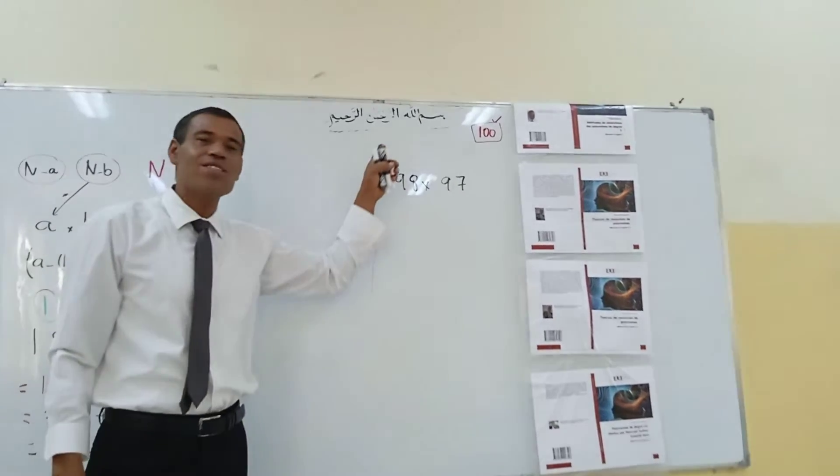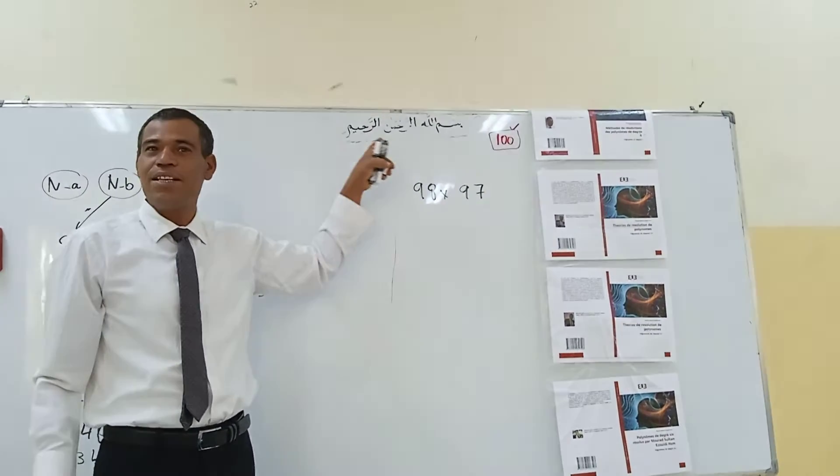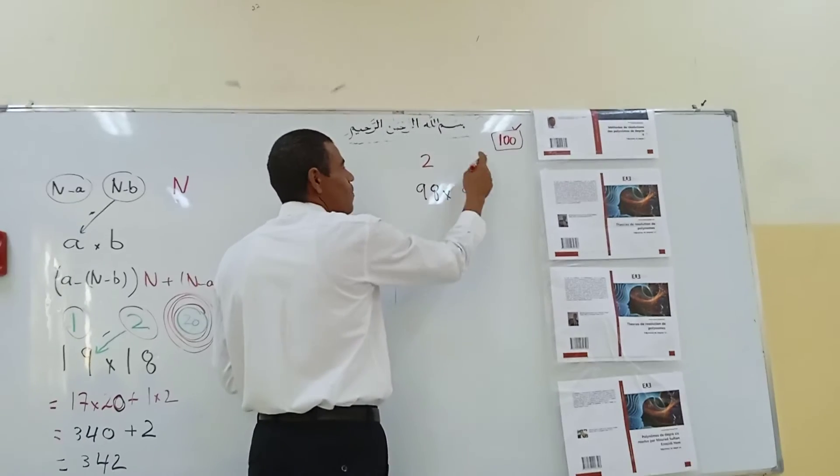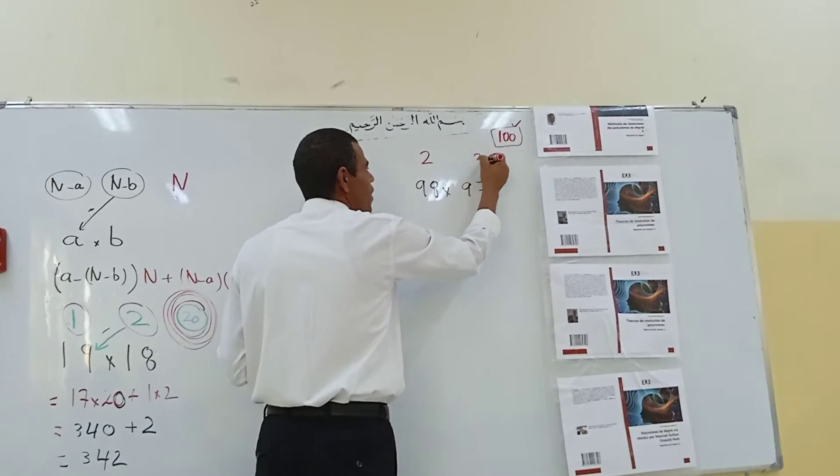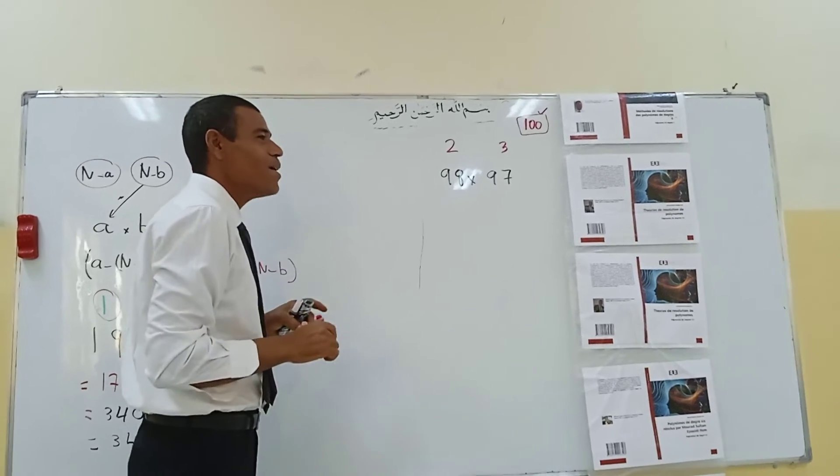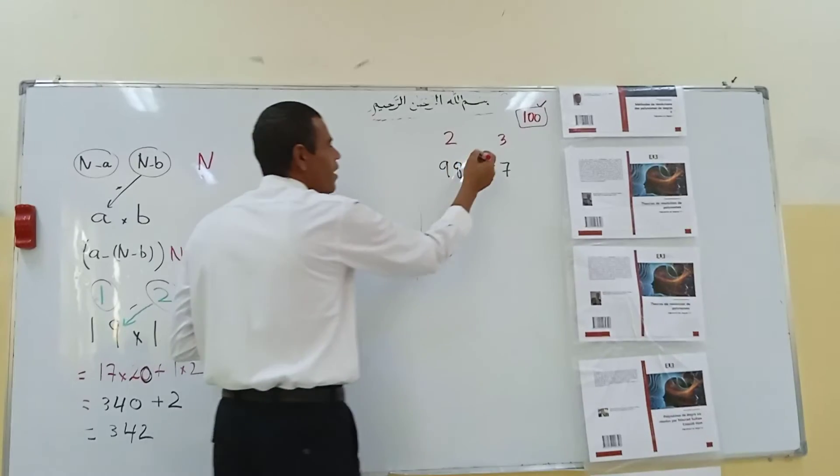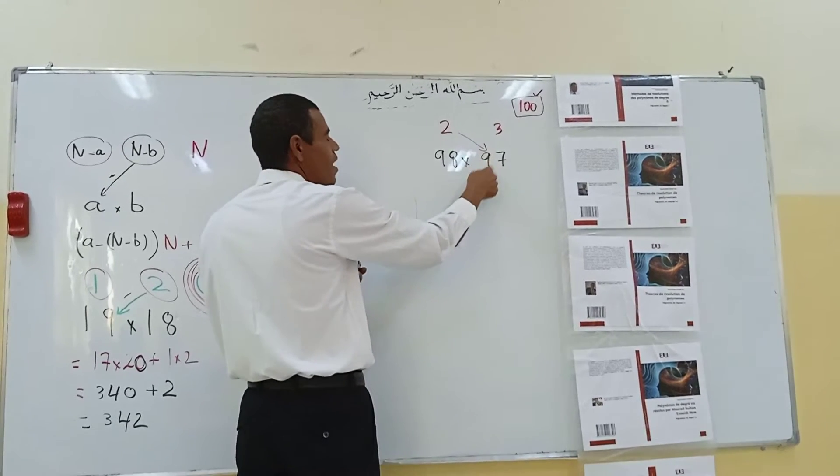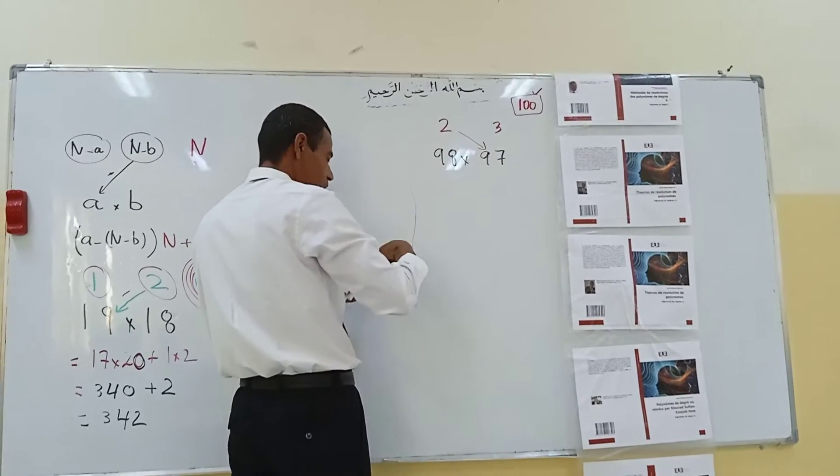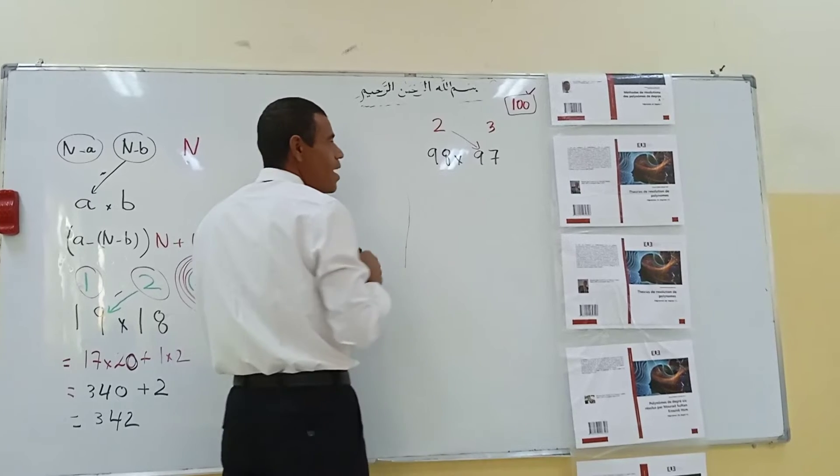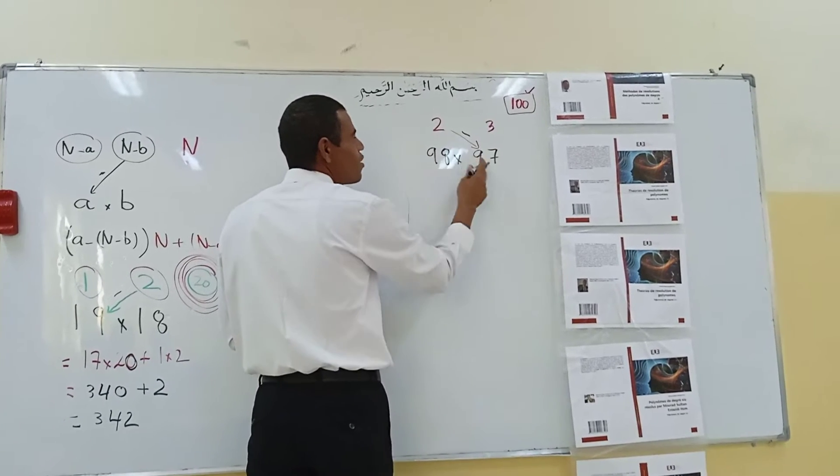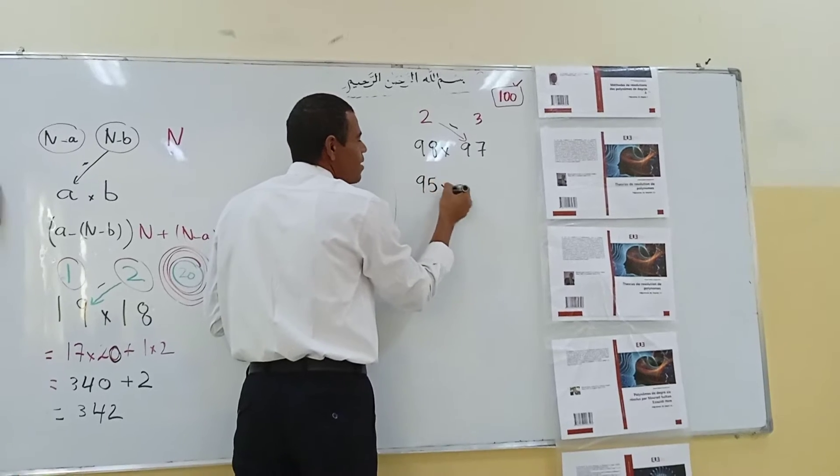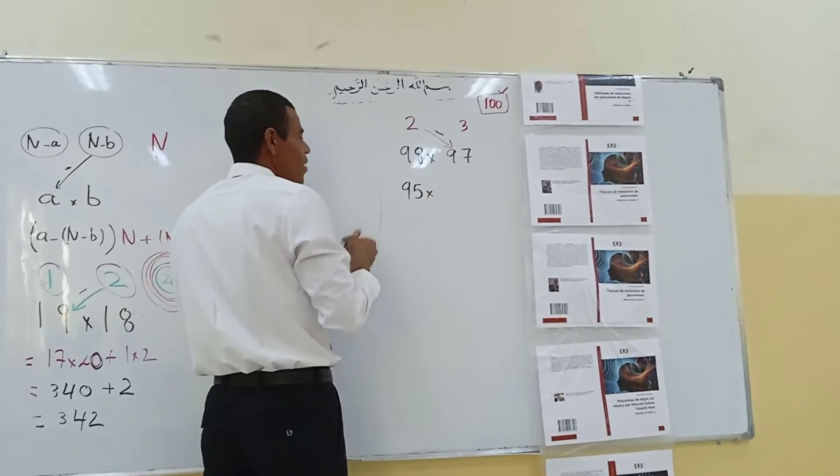Therefore 98 plus what gives 100? Plus 2. And 97 plus what gives 100? 3. Therefore I will make here 97 minus 3. 95, 95 multiplied by 100.